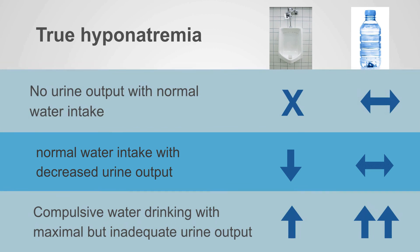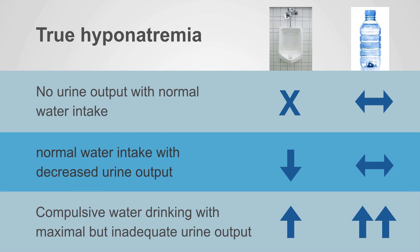So we've gone over no urine output with normal water intake and compulsive water drinking with maximal but inadequate urine output. We've left the middle scenario for future chapters — this middle one is the real big sweet spot in hyponatremia.